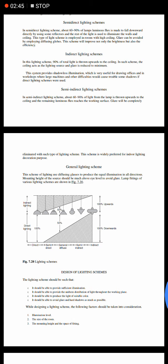General lighting scheme uses diffusing glasses to produce equal illumination in all directions. The mounting height of the source shall be much above eye level to avoid glare. The lamp fittings of various light schemes are shown in the figures.